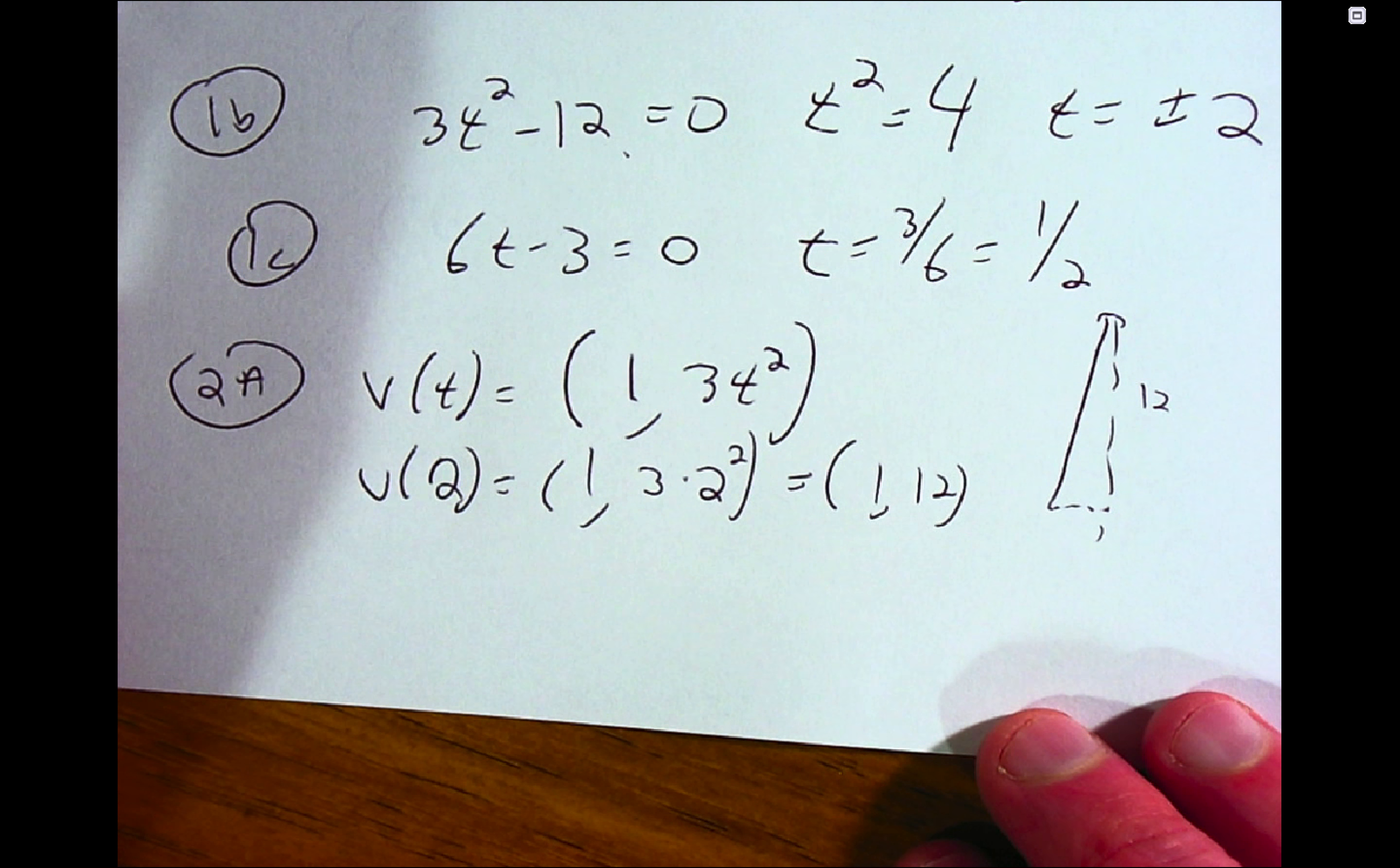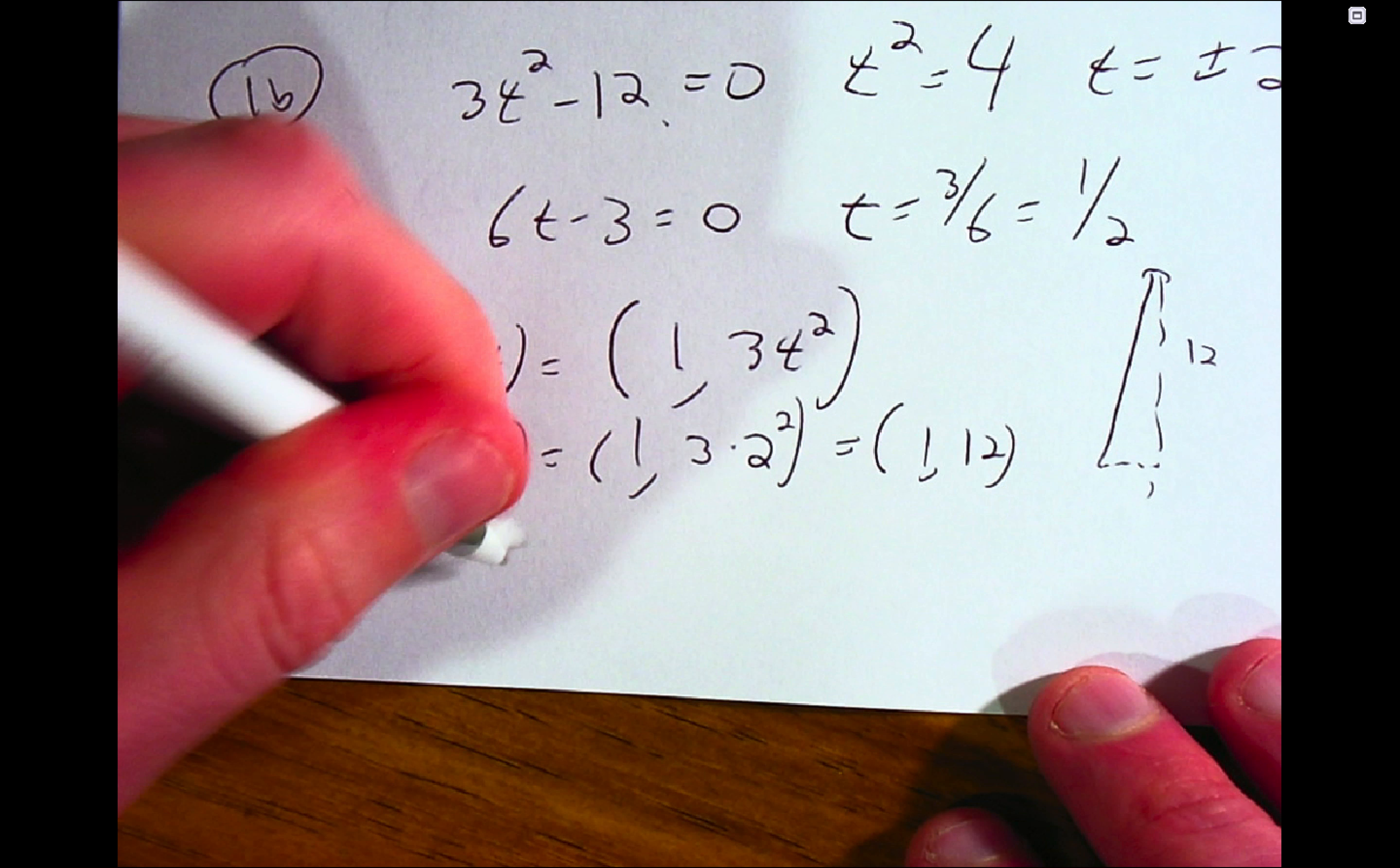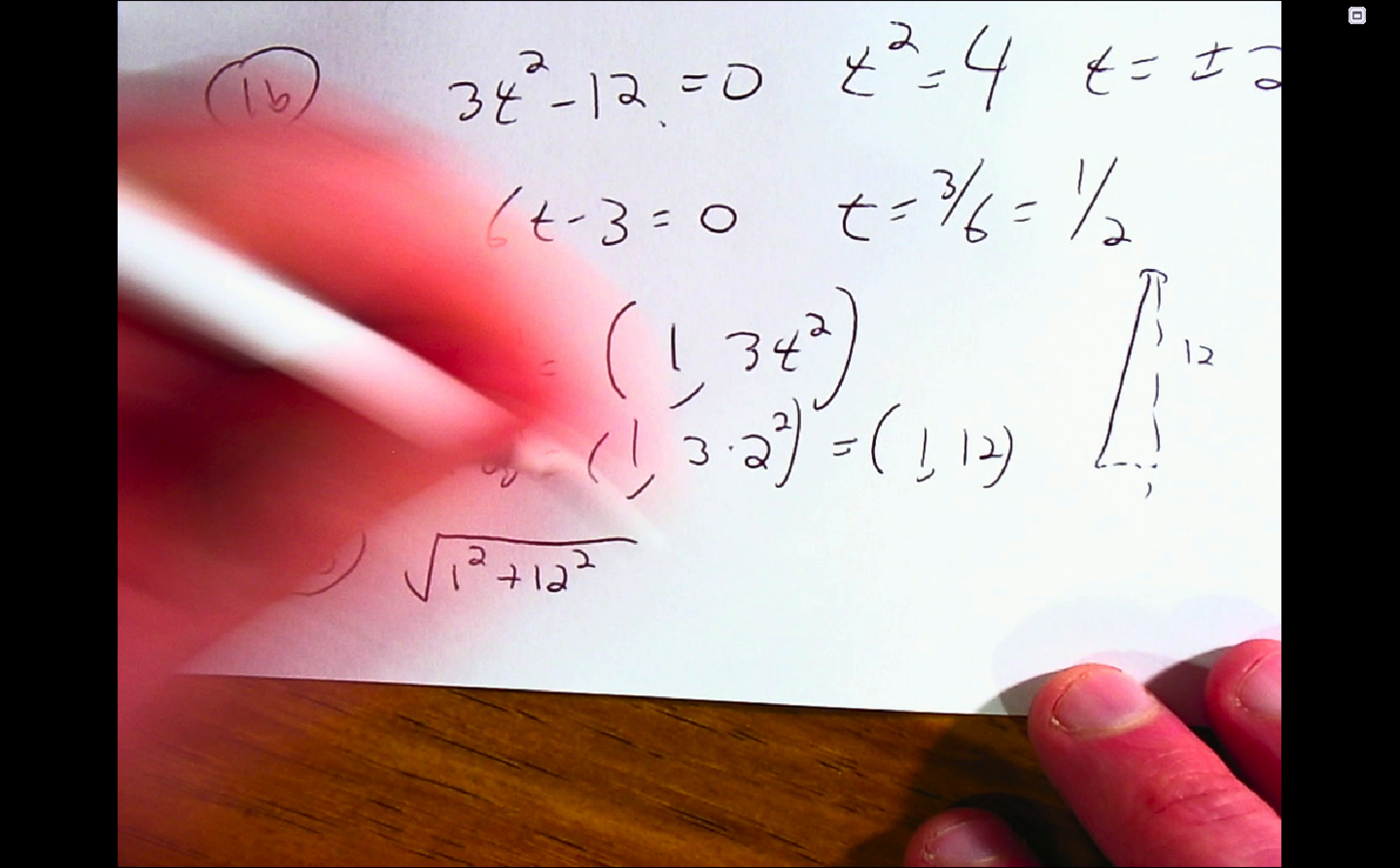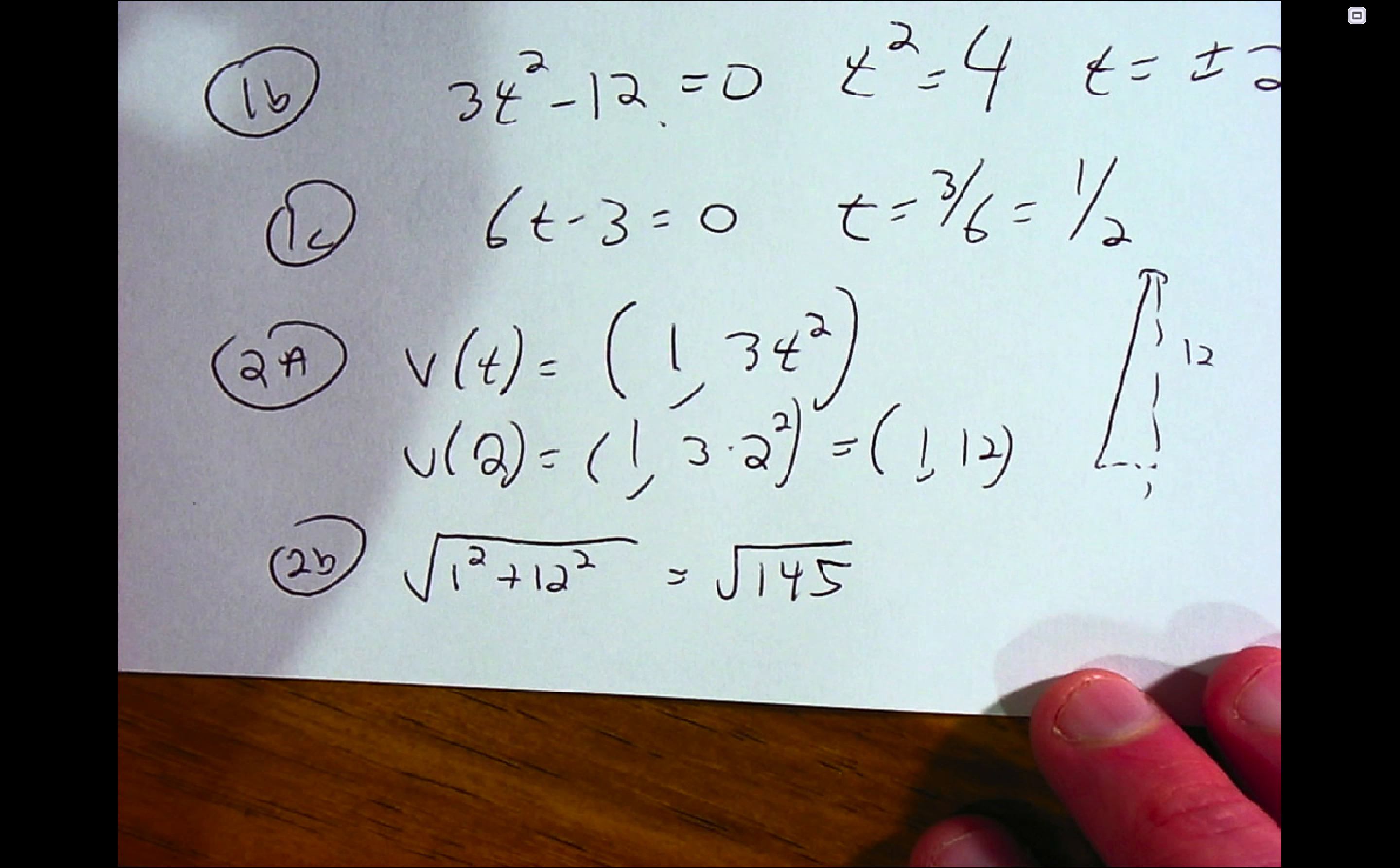What's the speed? Speed is the length of the velocity vector. So it's just a scalar. And so that comes from the Pythagorean theorem. So we get square root of 145.